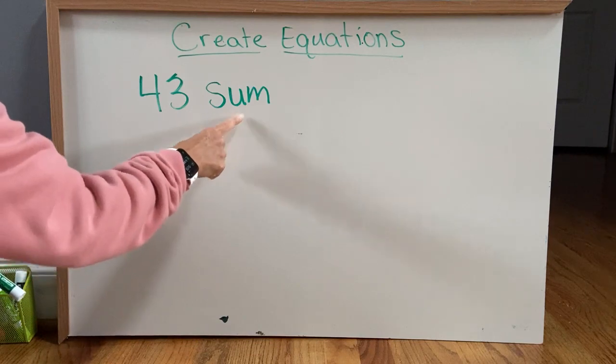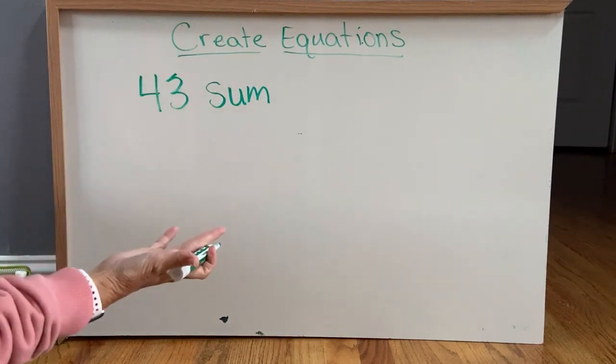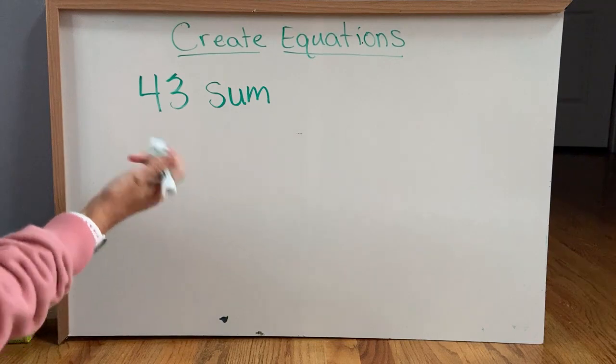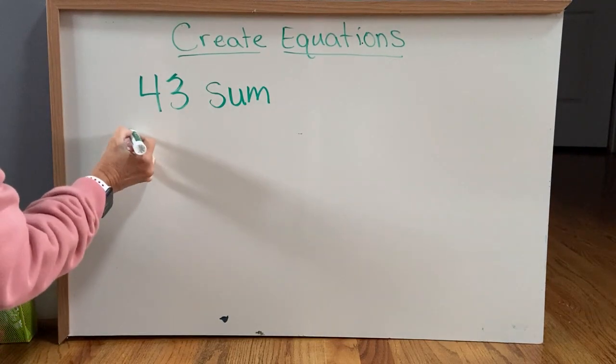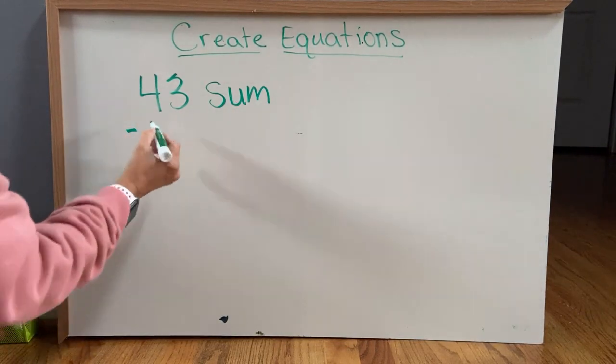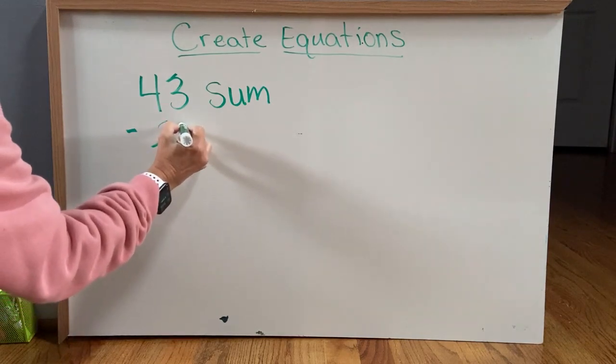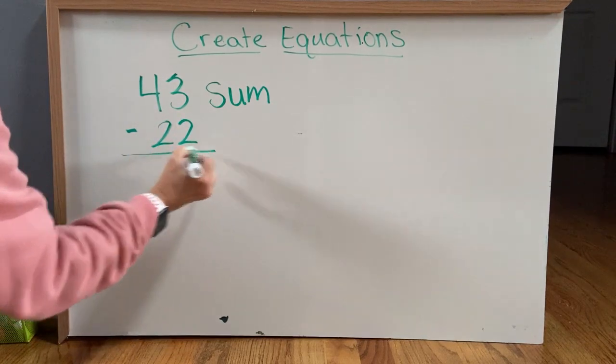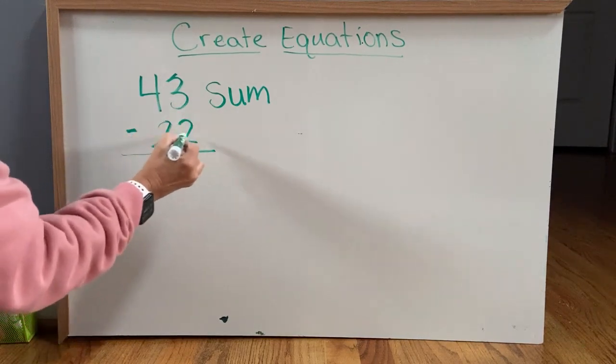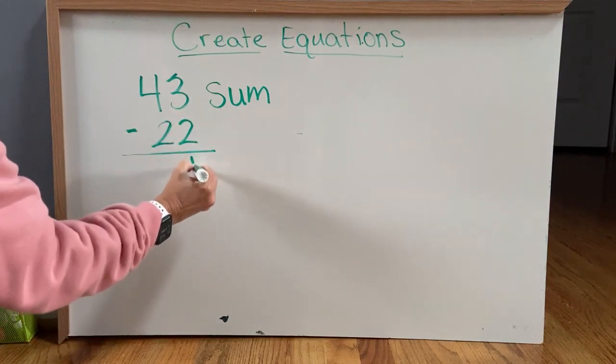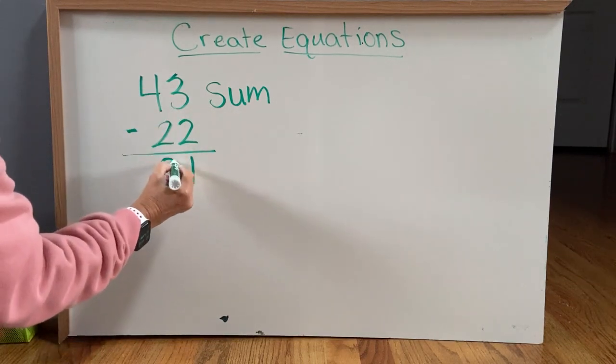In order to do that, the first thing we have to do is subtract, which seems silly, but if we subtract any number, just think of a number, I'm going to say 22. So if I subtract 43 minus 22, 3 minus 2 is 1, and 4 minus 2 is 2.